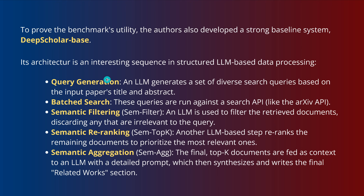First, you have query generation — an LLM generates a set of diverse search queries based on the human input. Those AI-generated queries then run against the search API, in our example arXiv. Then we have semantic filtering, where another LLM is used to filter retrieved documents, and anything irrelevant is ignored. But we still have a lot of documents — like 200 documents left after filtering.